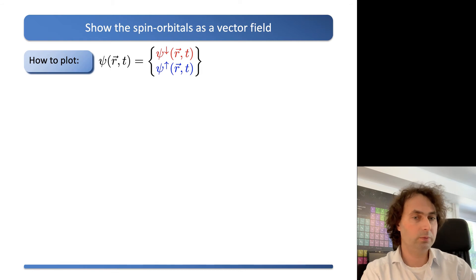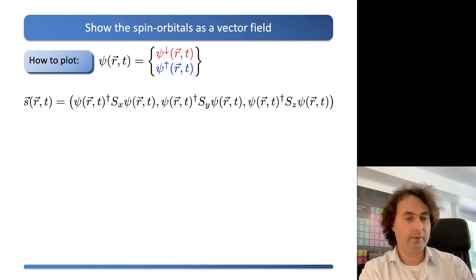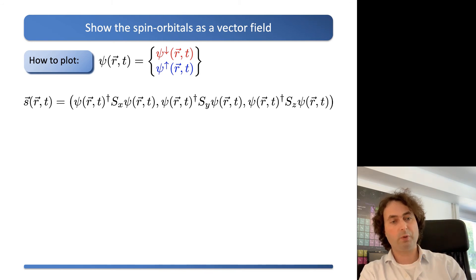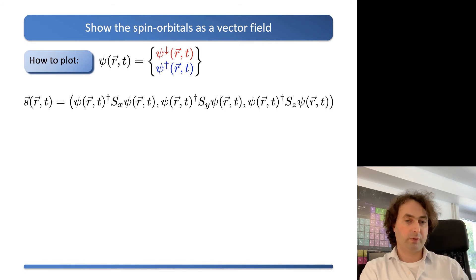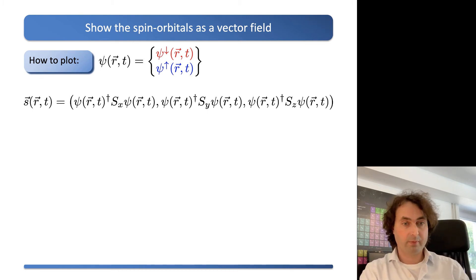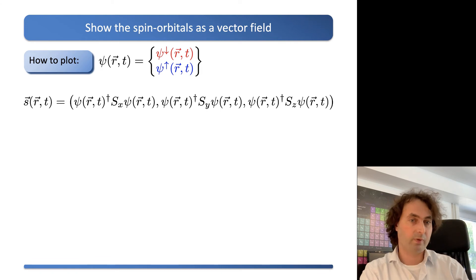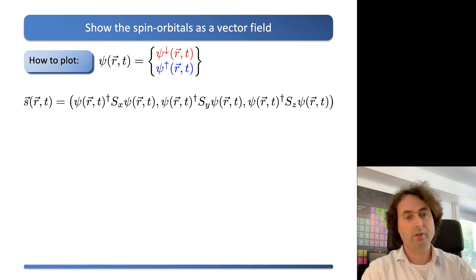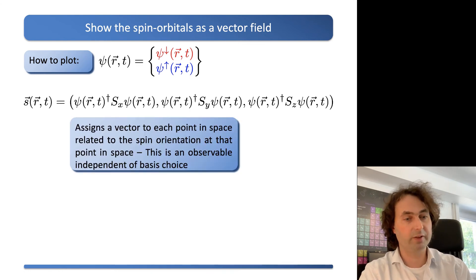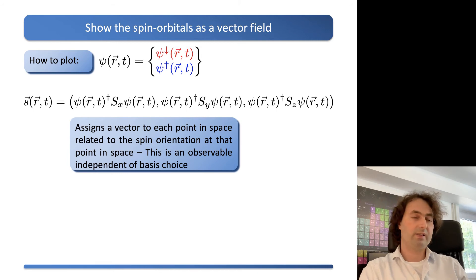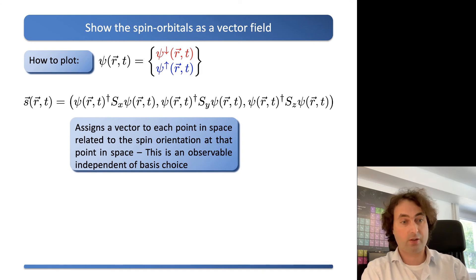We can calculate the local spin polarization. If you take your wave function complex conjugated, times the spin operator, times the wave function, the spin operator has three components — sx, sy, sz — so the wave function times the spin operator times the wave function gives you a vector at each point in space. This gives you the local magnetization or local spin magnetization due to that one electron. This vector field is an observable. If you do elastic or inelastic neutron scattering, you scatter on the local spin projection, and what you would measure is the Fourier transform of exactly this object.